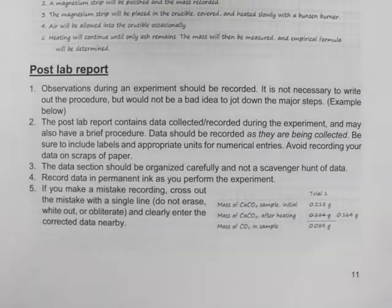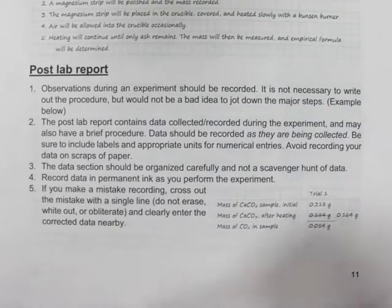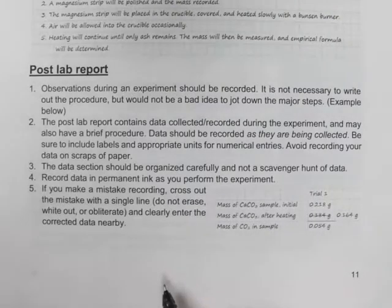For your post-lab report, you want to write down any observations as they're recorded, as they happen. You don't have to write out the whole procedure. If you want to, you can. The post-lab report will have all of the data that you collected during the experiment and can also have a brief procedure. You want to record data as it's being collected. Be sure to have labels and units for your entries and avoid recording data on scraps of paper.